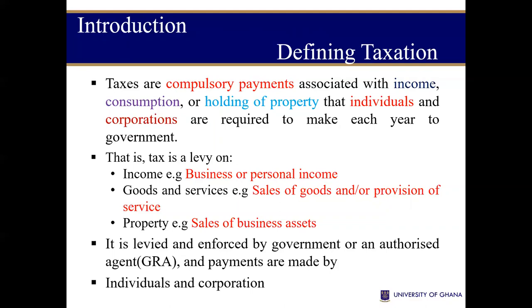Rather, it is the government that has the authority to impose tax. To put it all together, when you talk about tax, it is a compulsory payment that is levied on the income, consumption, and properties of individuals and corporations — corporations here meaning businesses — every year, normally, by governments.